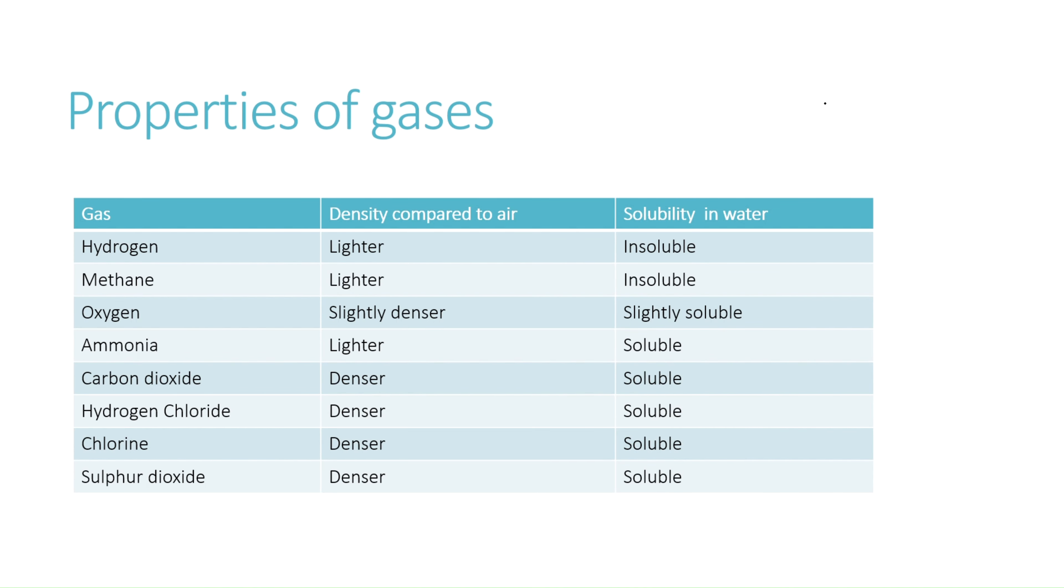Here you can see the properties of gases like their density and solubility. Hydrogen and methane are lighter and insoluble in water. Oxygen is slightly denser and slightly soluble. Ammonia is lighter but soluble in water. Carbon dioxide, hydrogen chloride, chlorine, and sulfur dioxide gases are denser as well as soluble in water.